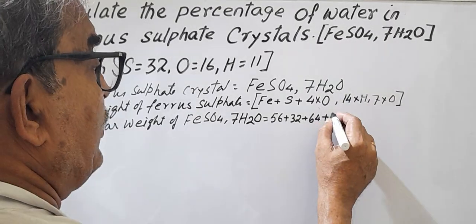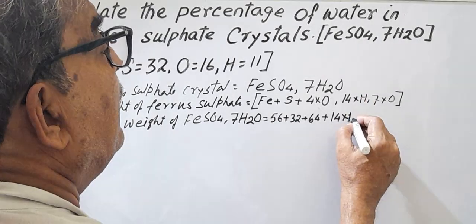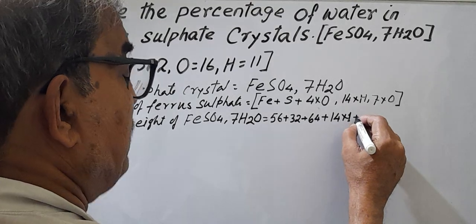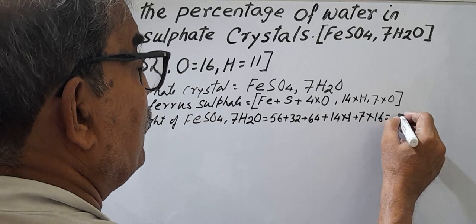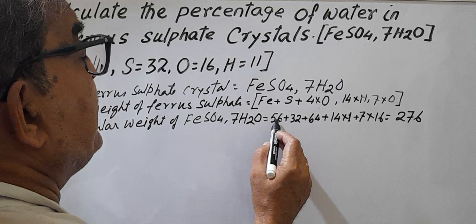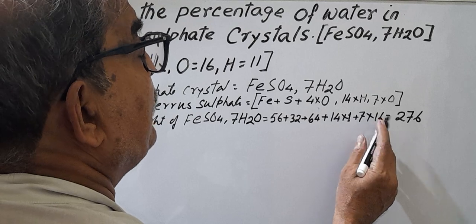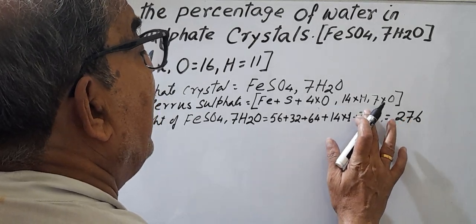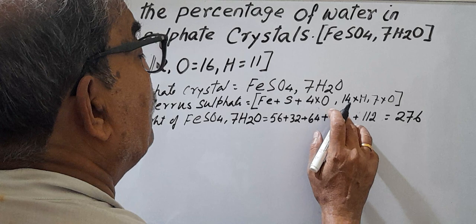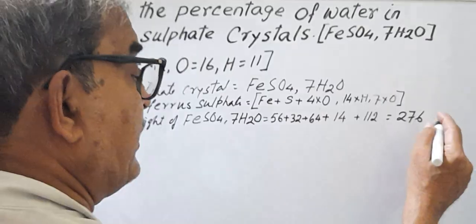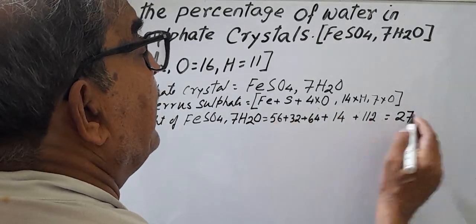Plus 14 into 1, hydrogen is 1, 14 into 1, and plus seven into 16, seven into 16, equal to 278.